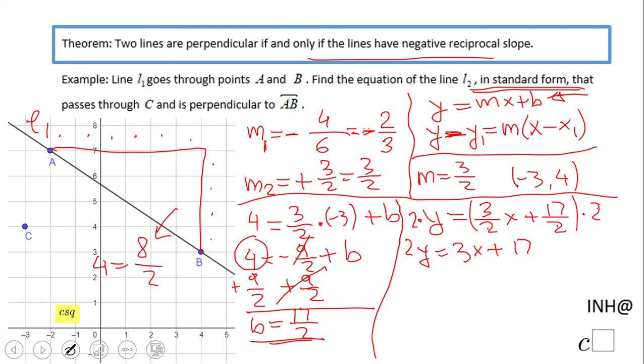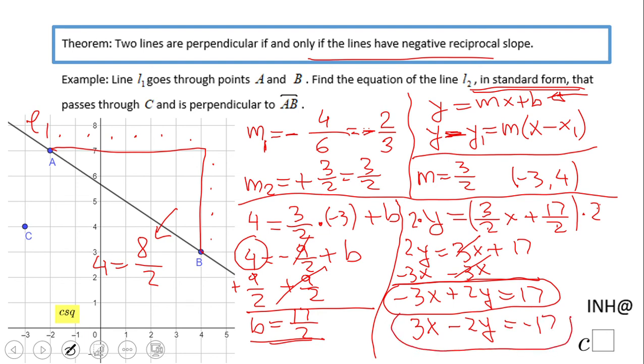The only thing I'm going to do here, subtract 3x. And we have negative 3x plus 2y equals 17. And this is a good form for some people. Some people don't like the negative 3x. So we're going to multiply by negative 1, or change the signs, and we get this one. So be careful. Some people like the first term to be a positive guy. And that's it.